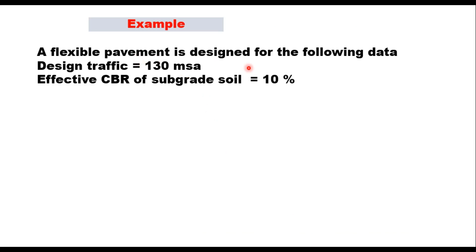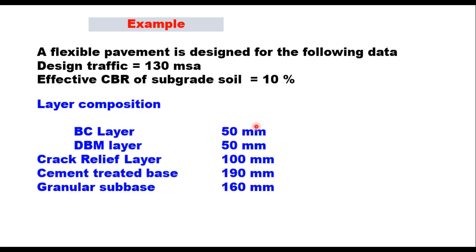Let us say a flexible pavement is designed for the following data: design traffic is 130 MSA, effective CBR of subgrade soil is 10 percent. And let us say when you design this pavement as per IRC 37, you get this composition: 50 millimeter of BC layer, 50 millimeter DBM layer, then you provide, because cementitious base is provided here, 190 millimeter thick, so above that you provide a crack relief layer of 100 millimeter, and below that you have a granular subbase of 160 millimeter. Now the point in question today is whether this subbase of 160 millimeter is adequate.